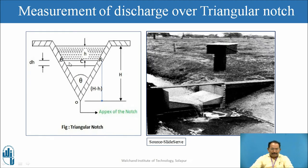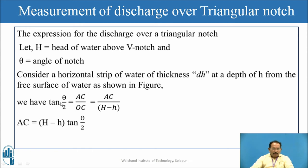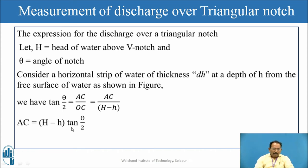Point O is the apex, A and B define the width of the strip, dh is the depth, and h is the height above the V notch. The remaining portion below the strip is (H - h). So tan(θ/2) = AC / OC, where OC = (H - h). Therefore AC = (H - h) tan(θ/2). Width of strip AB = 2·AC = 2(H - h) tan(θ/2).